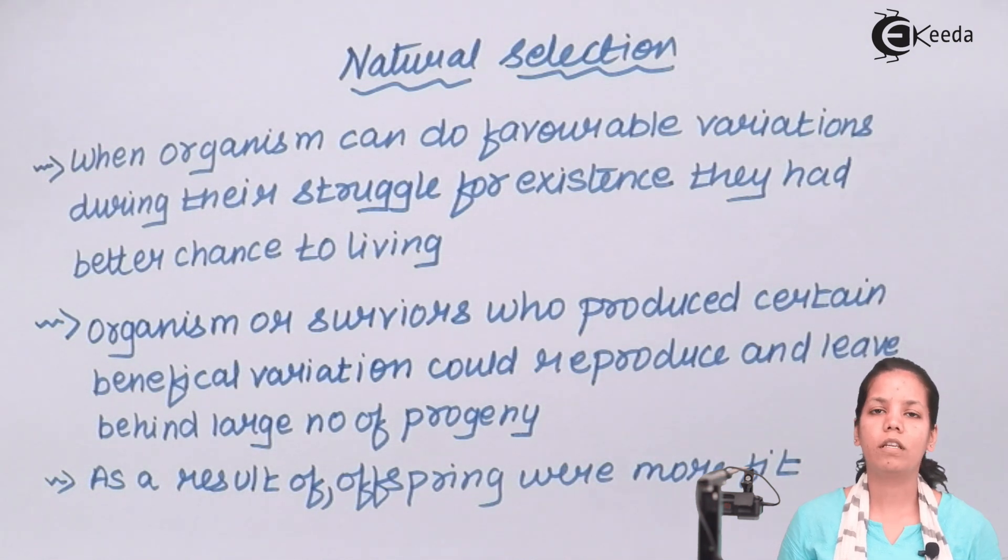So students, according to Darwin's theory of natural selection or survival of fittest, variations are a very important clue or bringing adaptations in simple sense are very necessary in order to survive and sustain in a particular atmosphere. Thank you.